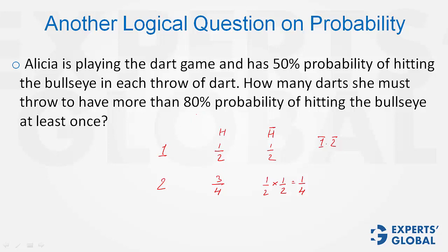We want the number of attempts for a probability greater than 80%. In three attempts, what would happen? The probability of not hitting will be half into half into half, 1 by 8, and therefore, the probability of hitting will be 1 minus 1 by 8, which is 7 upon 8.